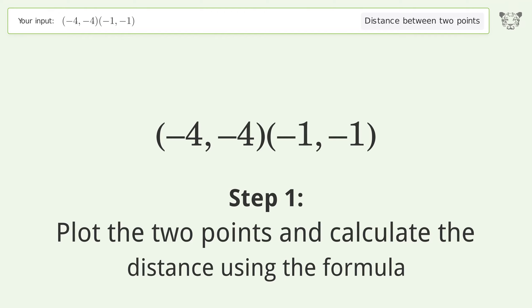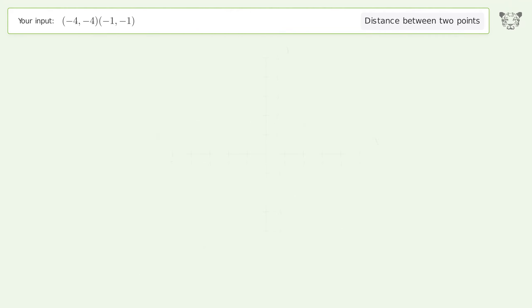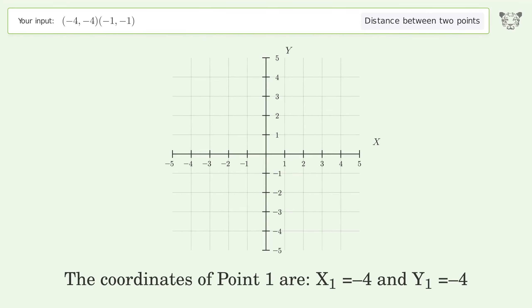Plot the two points and calculate the distance using the formula. The coordinates of point 1 are x1 equals negative 4 and y1 equals negative 4. The coordinates of point 2 are x2 equals negative 1 and y2 equals negative 1.